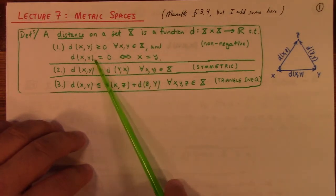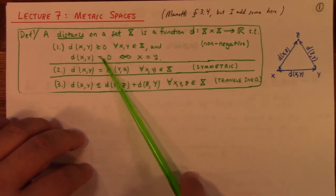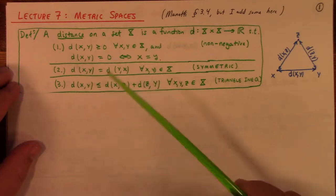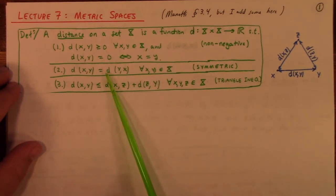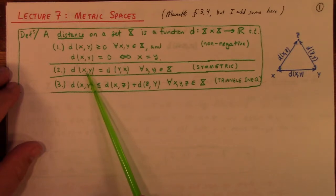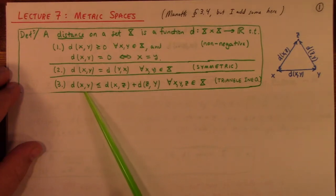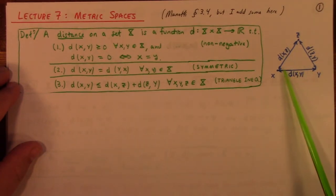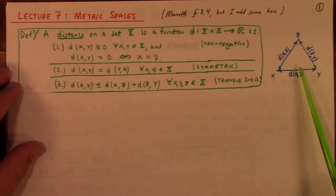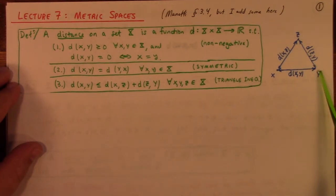I tried to find a name for this property but it doesn't seem to be an agreed-upon name. Anyway, this here is the symmetry of distance — the distance from point A to point B is the same as the distance from point B to point A. And of course the triangle inequality, which you can see in this heuristic picture: the distance from X to Y is less than or equal to the distance from X to Z plus the distance from Z to Y. If those distances are equal, it means X, Y, and Z are along a line.